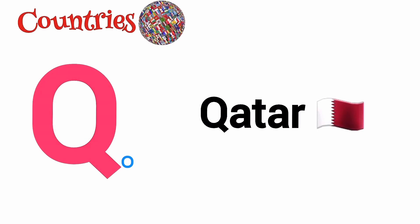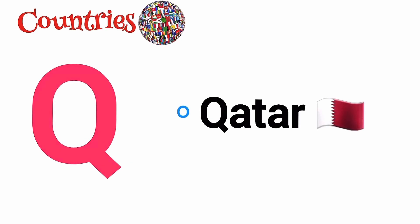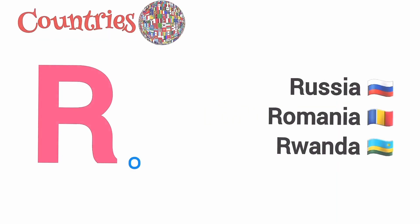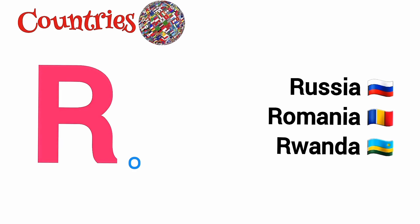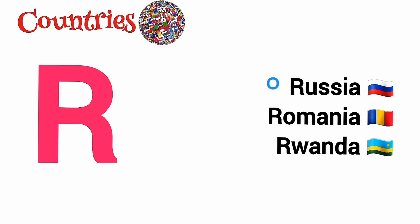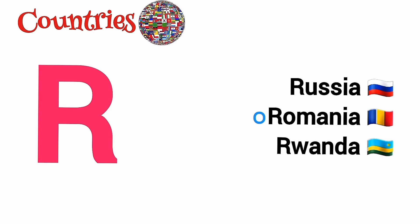Q is for Qatar. R is for Russia, Romania, Rwanda.